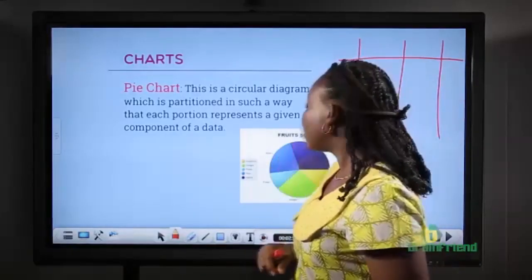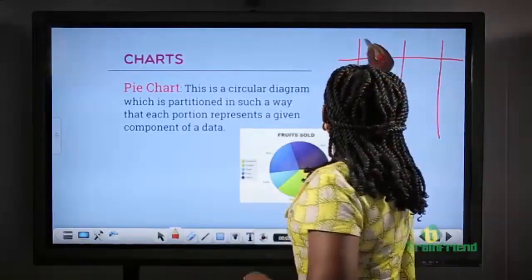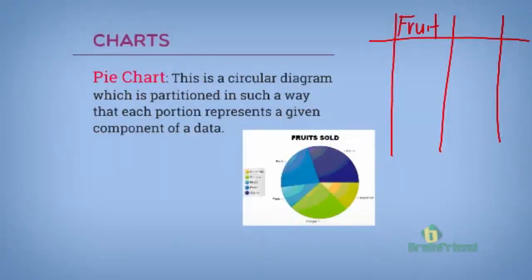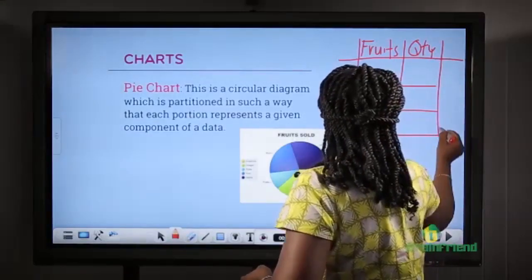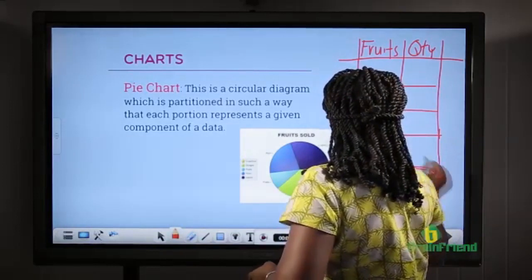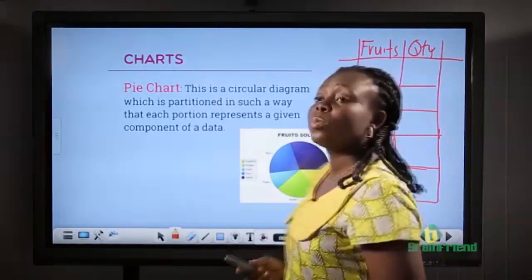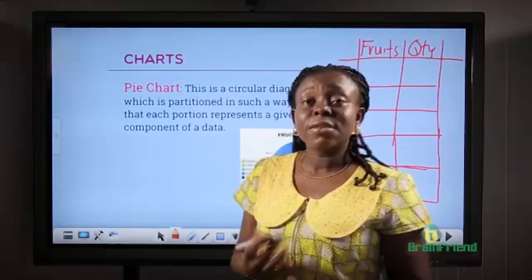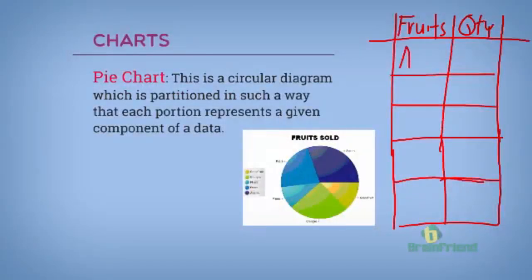Let's look at a table depicting this. From our pie chart, we have five fruits and quantity or amount. Let's assume we sold 300 fruits. Apples, we sold 100. We have oranges, we sold 80.